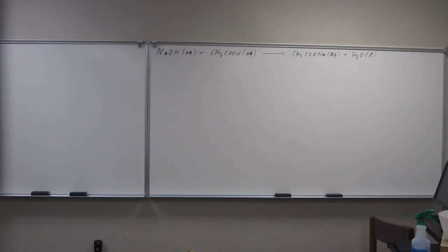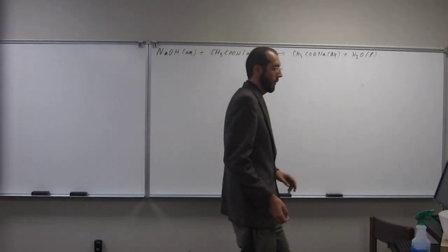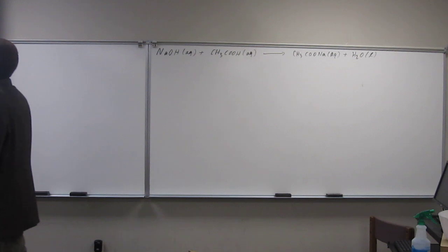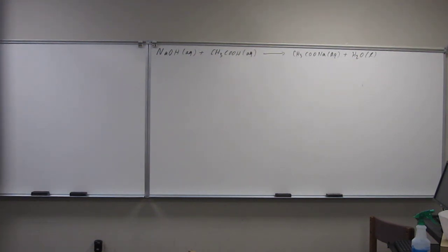Let's try this problem. A 25.0 milliliter sample of dilute acetic acid is titrated and found to react with 94.7 milliliters of 0.2 molar NaOH. What's the molarity of the acetic acid solution?